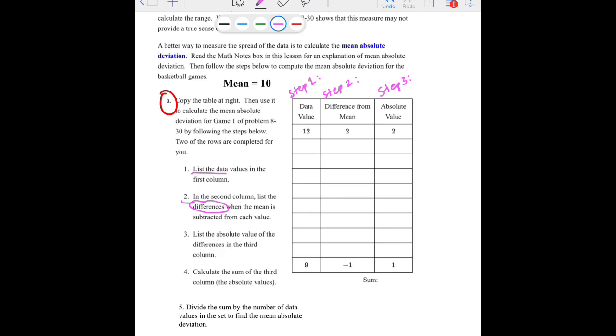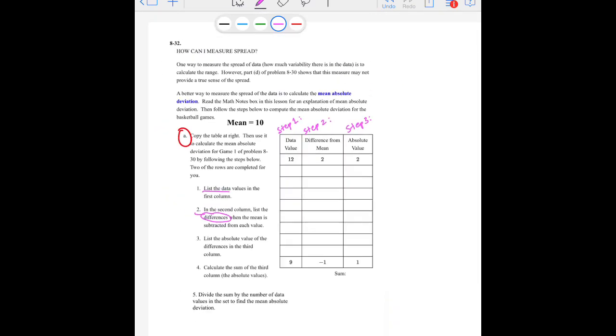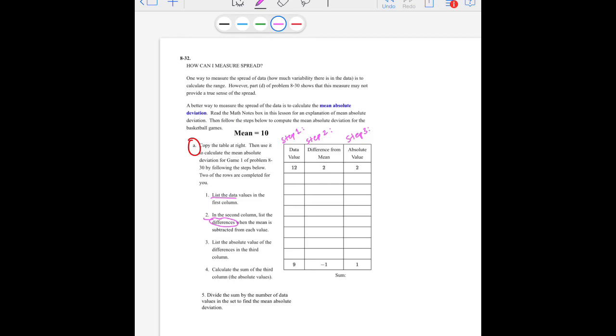And that's the column right here. So this is part or number 2 or step 2. And then this will be step 3. So step 2 says you're going to find the difference. So the first data was 12. And we're going to find the difference, which means to subtract. And the mean was 10. Therefore, the answer is 2. And then step 3 says to find the absolute value of that. So you're going to take your answer from Part 2 and find the absolute value of that, which is 2.